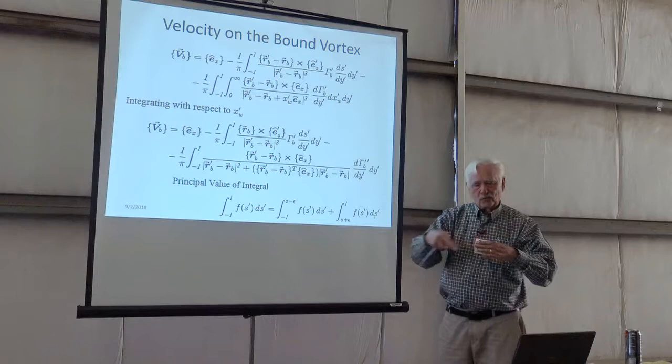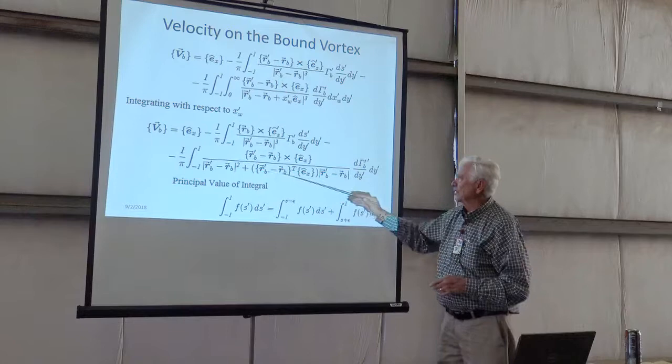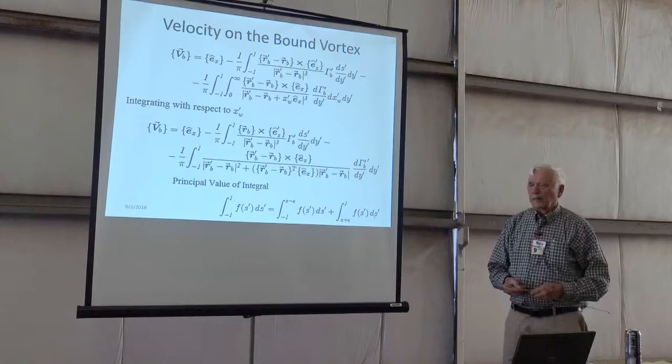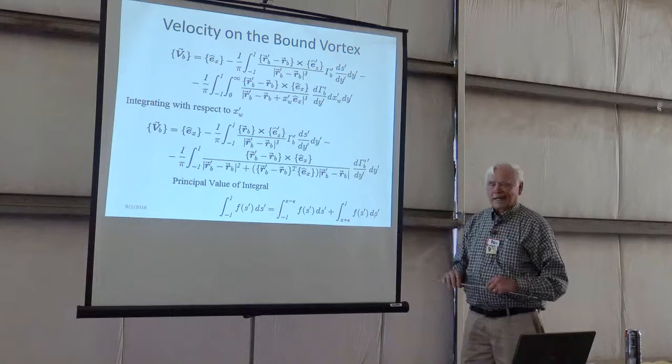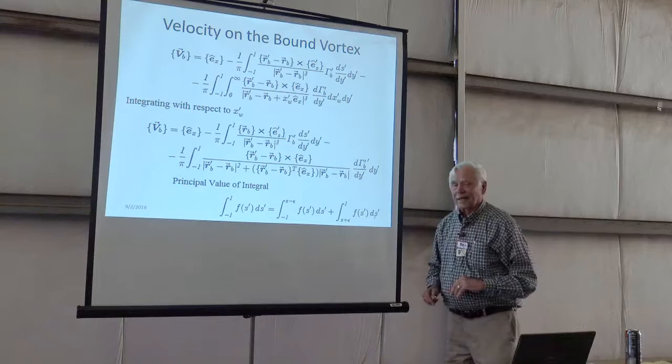When you have a bound vortex and a trailing vortex that are perpendicular, this whole term drops out, and you come back to classical Prandtl things. But I want to be able to do it, I can't do it analytically, it's just too hard. But I can do it numerically. And there are problems when this equals that, it blows up.